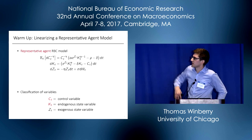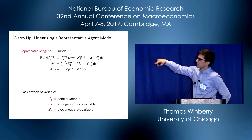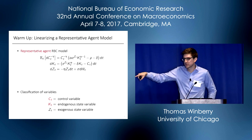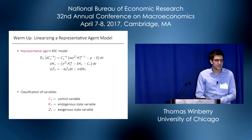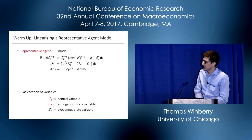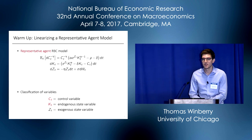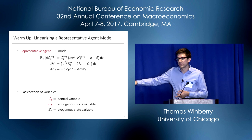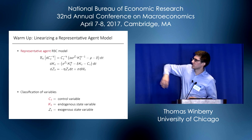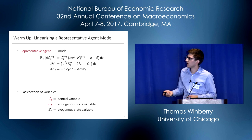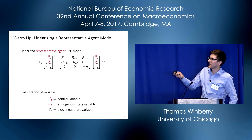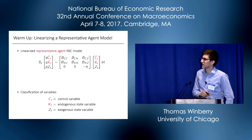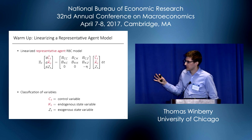The stochastic growth model in continuous time has three equilibrium conditions: an Euler equation for consumption, evolution of aggregate capital stock, and evolution of aggregate productivity. The three variables are aggregate consumption CT (the control variable), aggregate capital KT (an endogenous state variable), and aggregate productivity ZT (an exogenous state variable). To linearize, you compute steady-state values, take a first-order Taylor expansion around steady state to get a linear system where hats denote deviations from steady state, then solve using standard methods like eigenvalue-eigenvector decomposition. That's exactly what we do with heterogeneous agent models as well.